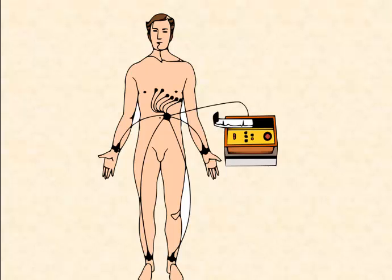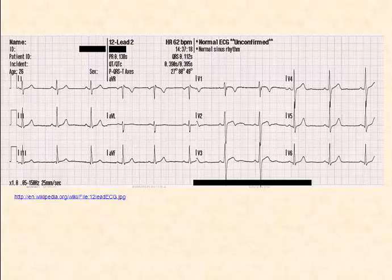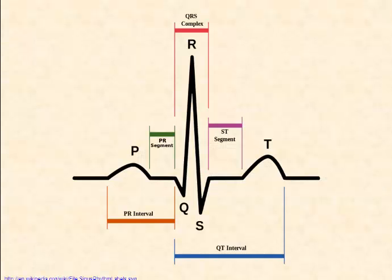This electrical activity can be monitored by an EKG machine, and an electrocardiograph of the activity is produced. The P portion of the wave indicates the SA node is active and the atria are contracting. The QRS section results when the AV node is activated and the ventricles contract. The T portion of the wave indicates the time of ventricular recovery from contraction.